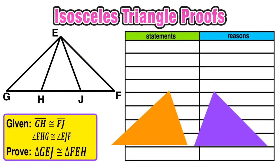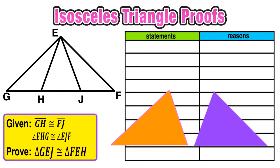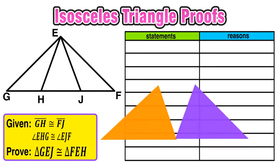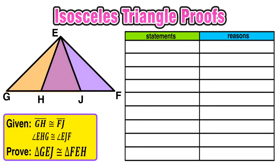So for this example, we have two pieces of given information and we want to prove that triangle GEJ is congruent to triangle FEH. Now notice that these two triangles are overlapping — here's GEJ and here's FEH. And again, we want to prove that these two triangles are congruent to each other, so it is helpful to redraw them spread apart and not overlapping, otherwise things do get kind of confusing. Since these triangles are overlapping, they both share triangle EHJ in the middle, so keep that in mind.